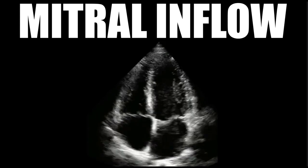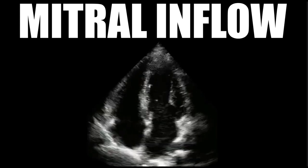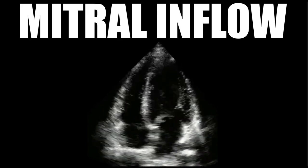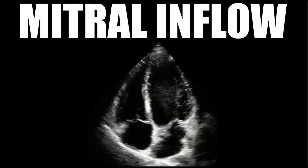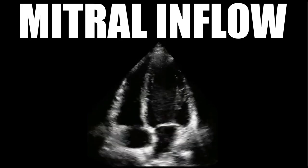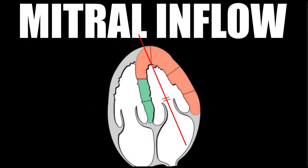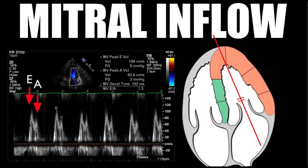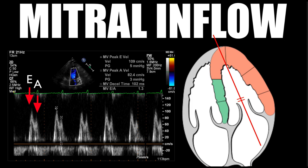You're going to want to get an apical four-chamber view of the heart, with a nice view of the mitral valve, making sure that you can see the entire left atrium. You'll want to place the pulsed wave Doppler gate right at the tips of the mitral valve leaflets, just when they're open — right there at the tips. Once you hit pulsed wave Doppler, it's going to give you these velocities, which represent blood flow as it moves into the left ventricle.